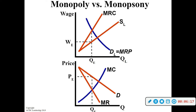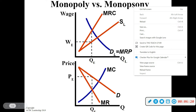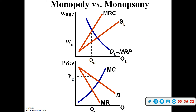Monopsony is basically the same concept as a monopoly, but instead of producing products with one producer controlling the market, now one hiring firm controls the labor market. That's why demand and marginal revenue are not the same in a monopoly, and why MRC is greater than supply in a monopsony. In perfect competition, wage and MRC were the same, but because a monopsony has to give raises to attract new workers, the MRC is higher than the wage actually paid.